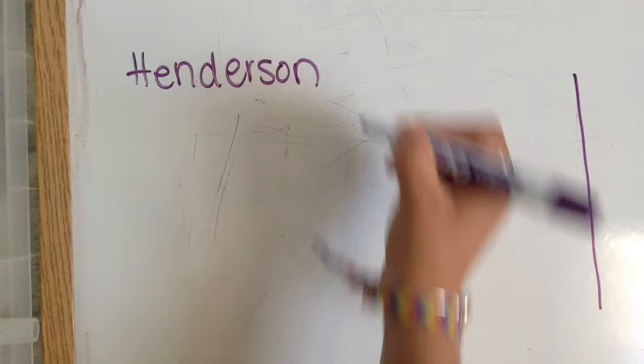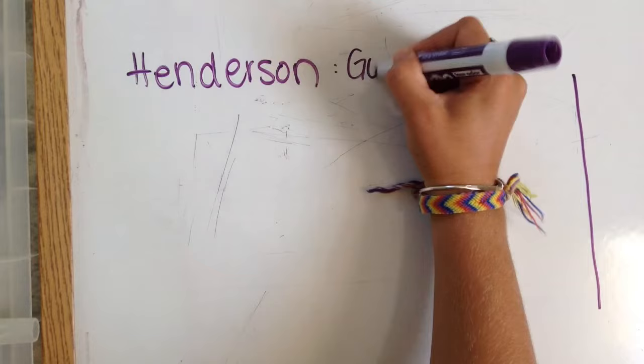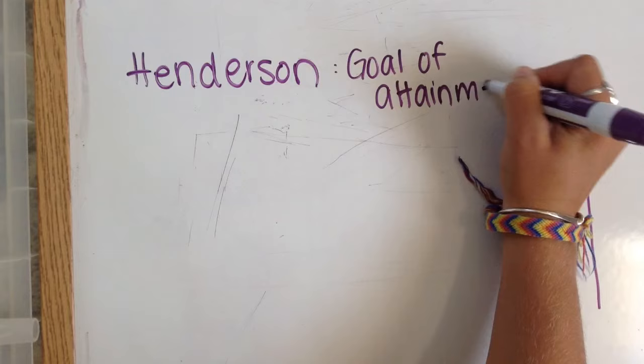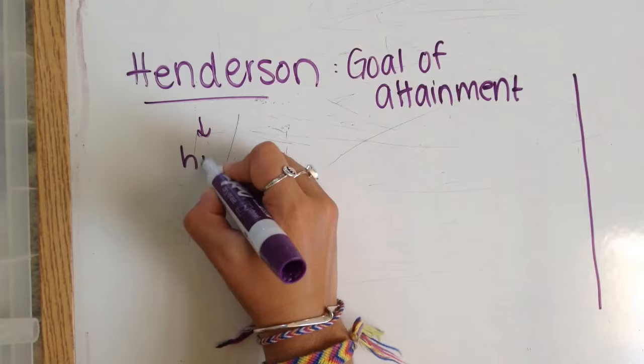First, we're going to talk about Henderson's theory. And this is going to be the need theory. You're going to know this based on this mnemonic: Henderson sounds like 'hinder,' and when you're hindered, you're slowed down — you need something.